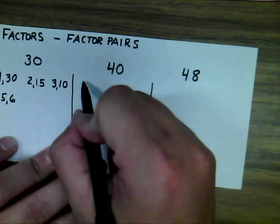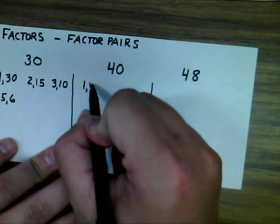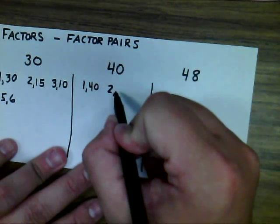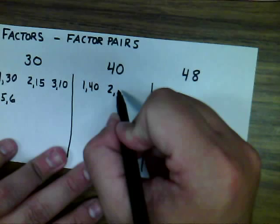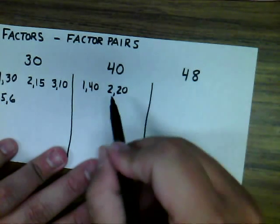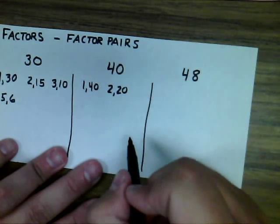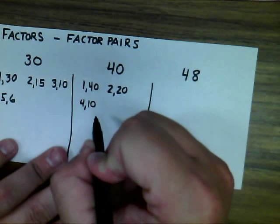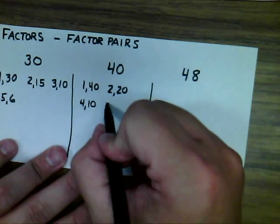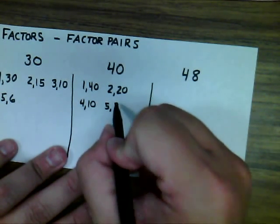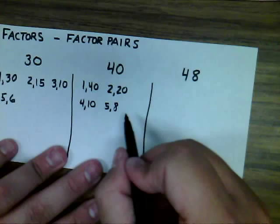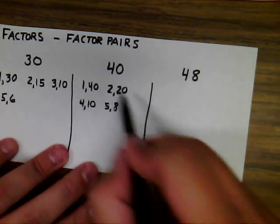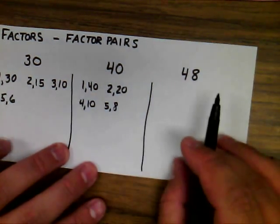For 40: 1 and 40, 2 goes into 40 because it's even — 2 times 20. 3 does not go into 40, but 4 times 10 sure does. 5 times 8. Neither 6 nor 7 go into 40. So those are all the factor pairs of 40.